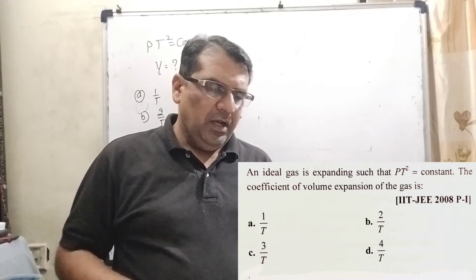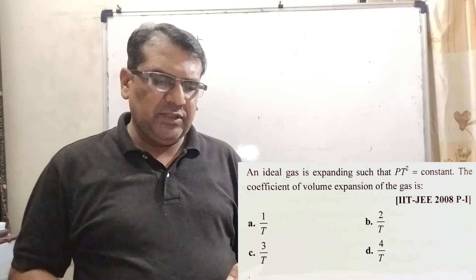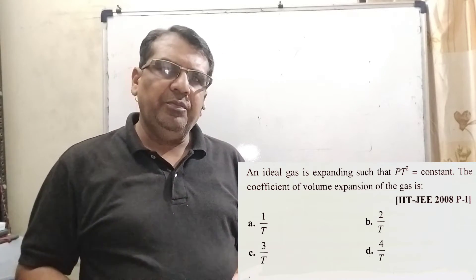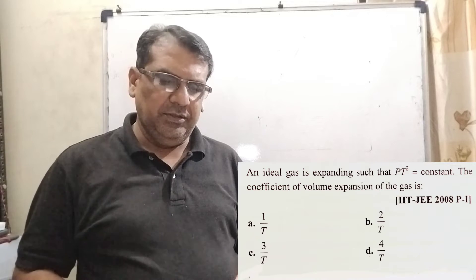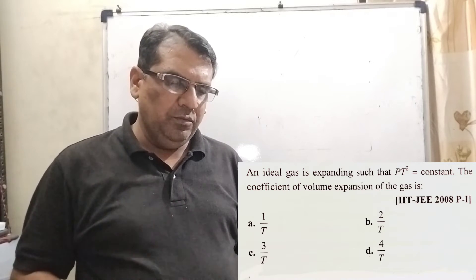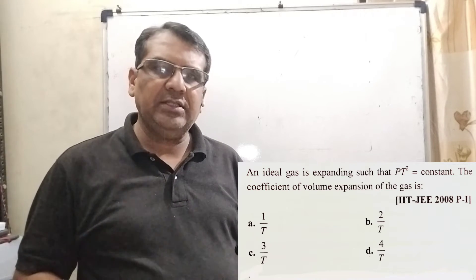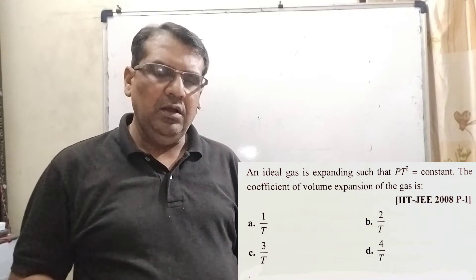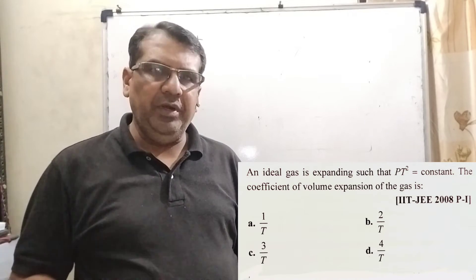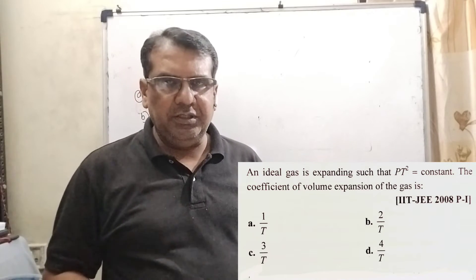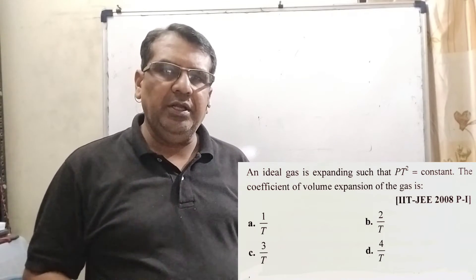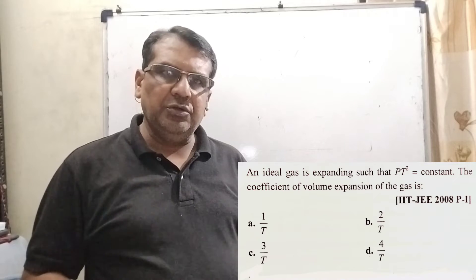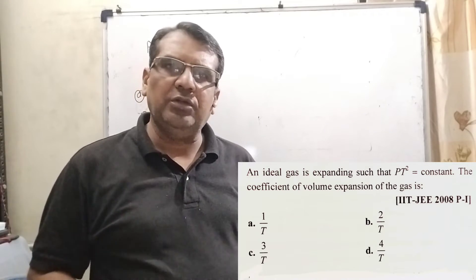Now here is the question. An ideal gas is expanding such that Pt² equals constant. The coefficient of volume expansion of the gas is. Here we have given four options. Option A: 1/T. Option B: 2/T. Option C: 3/T. And option D: 4/T. This question is asked in IIT-JEE 2008.